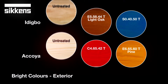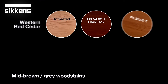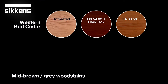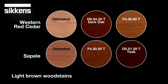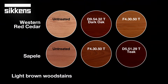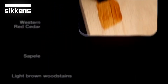A mid-coloured softwood such as western red cedar works best with pale to mid-brown or grey wood stains. And when it comes to a really dark wood such as sapele, your colour choice is limited to just light brown stains that complement the natural appearance of the timber. Whites and pastel shades do not work with such dark wood.